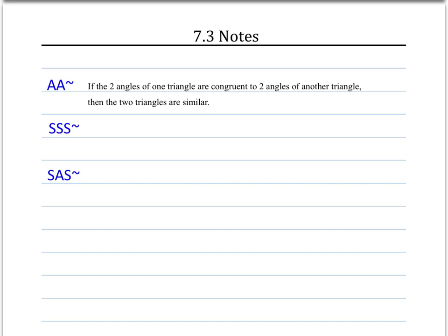The first theorem we'll talk about is AA similarity. That states if two angles of one triangle are congruent to two angles of another triangle, then we can prove that the two triangles are similar. Remember, the word similar means they have the same shape, the same angles, but the sides are proportional. Let's talk about an example of AA similarity.